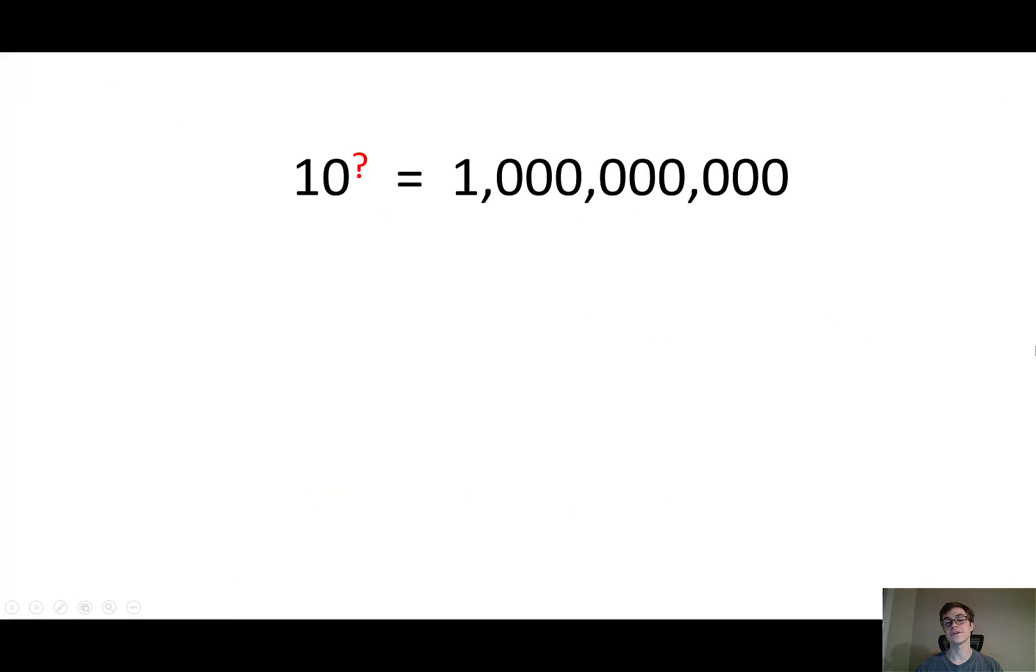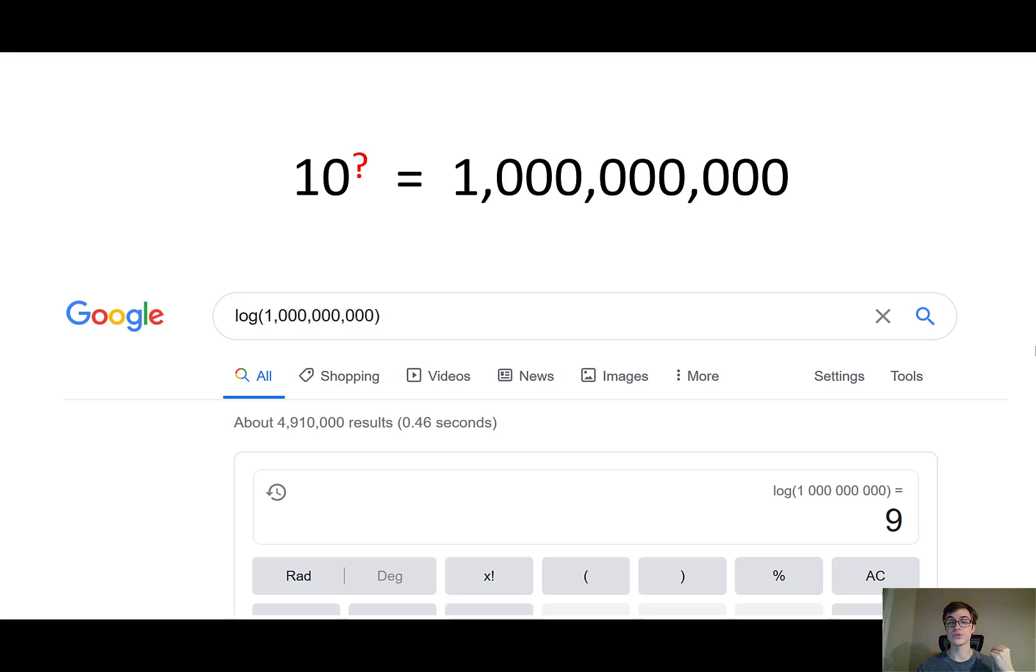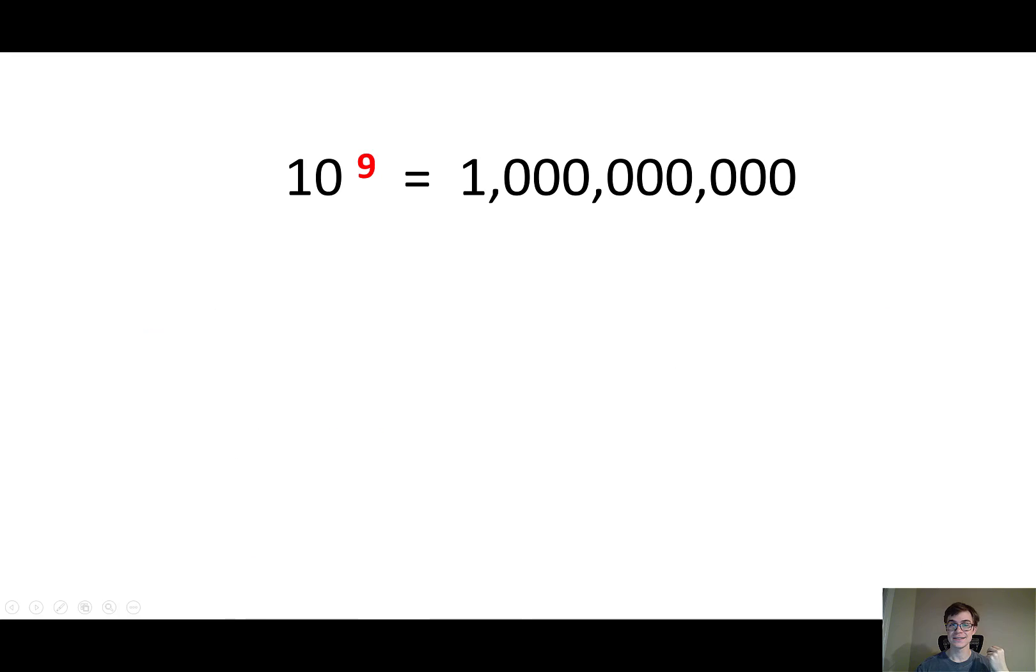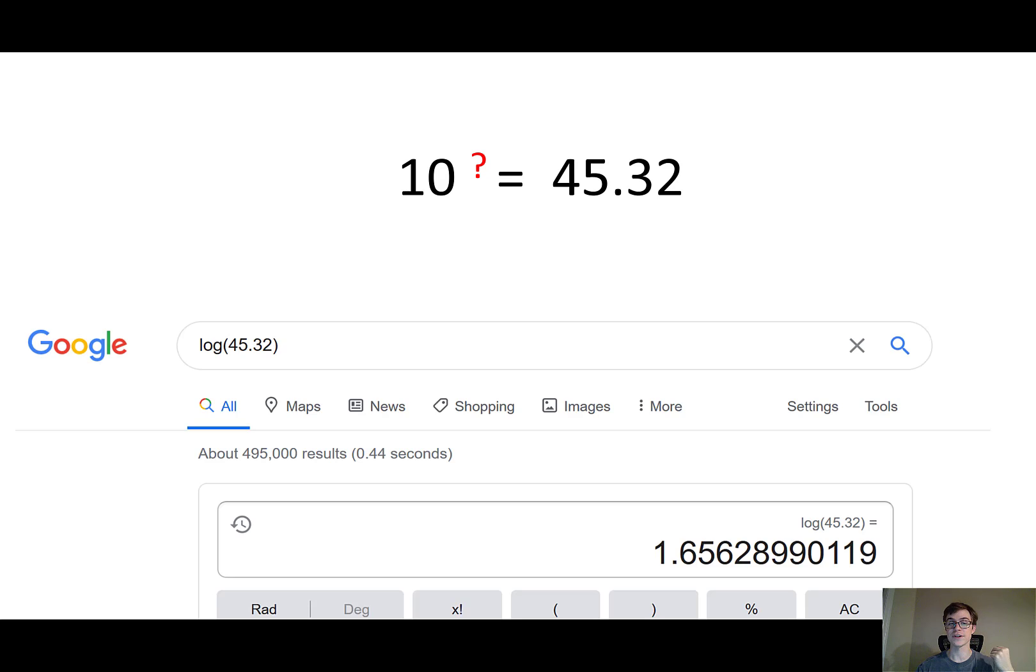So let's do it with some other numbers. 10 to what power gives you a billion? Well, you could go to Google, take the logarithm of a billion to figure it out, and Google says that it's 9. 10 to what power gives you 45.32? Well, I'll just take the logarithm of 45.32. Google says it's about 1.656, which I'll just round to about 1.66, and that's the answer.